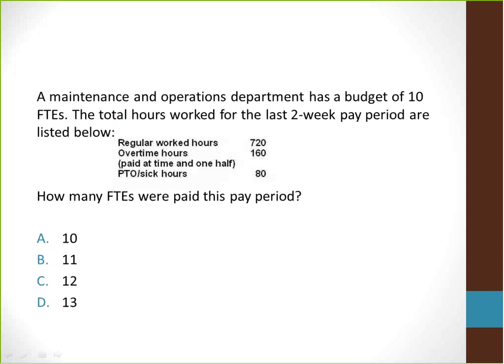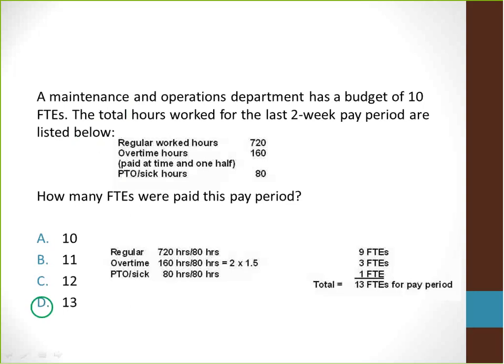A maintenance and operations department has a budget of 10 FTEs. The total hours worked for the last two-week pay period are listed on the screen. How many FTEs were paid this pay period? The equation for how to calculate it is shown on the screen. The correct answer is a total of 13 FTEs for the pay period.